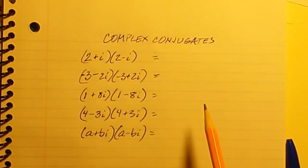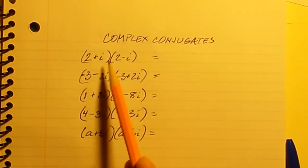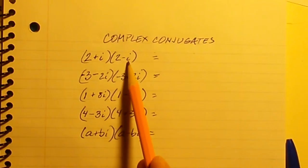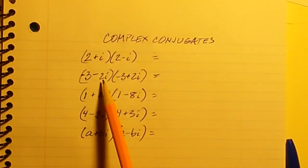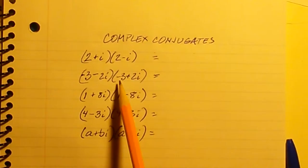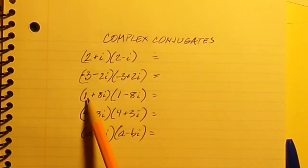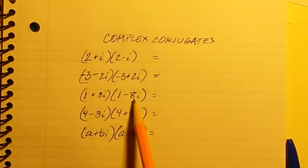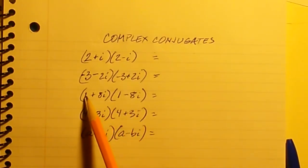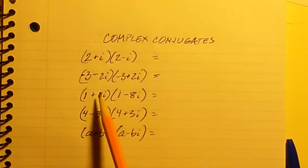Here's what a complex conjugate is. Here's a complex number: 2 plus i. The conjugate of 2 plus i is 2 minus i. The conjugate of negative 3 minus 2i is negative 3 plus 2i. The conjugate of 1 plus 8i is 1 minus 8i. The real part always stays the same and the imaginary part changes signs.